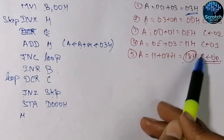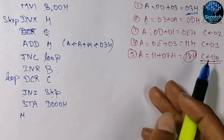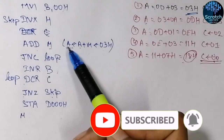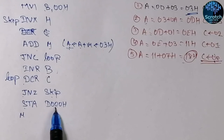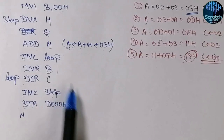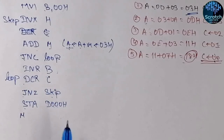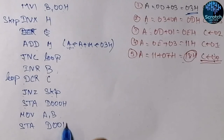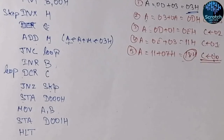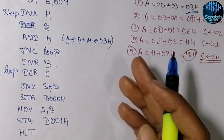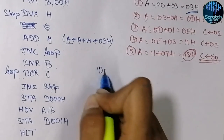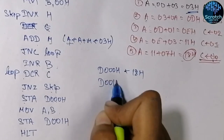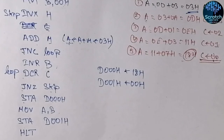When C becomes 00, all data has been added up in the accumulator. We store the result in memory location D000 hex using STA. The carry part is in register B, so we first move it into the accumulator and then store it at location D001 hex, followed by HLT. In our example, D000 hex will contain 18 hex and D001 hex will contain 00 as there is no carry.